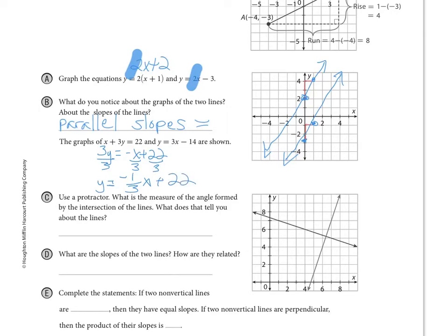So in this case it says use a protractor and we could plunk a protractor down here but they want to know what is the measure of the angle formed by the intersection of the lines. So what is this angle right here likely to be? If we use a protractor it's 90 degrees. So what does that tell you about those lines? Of course we know the definition is that that means that they are perpendicular.